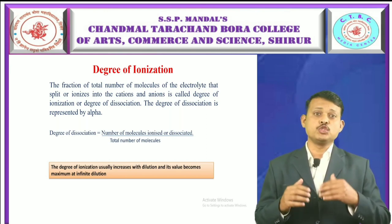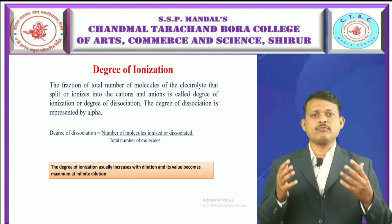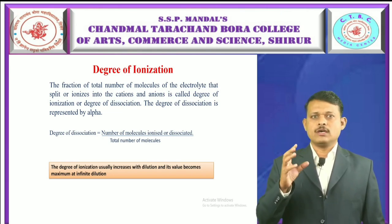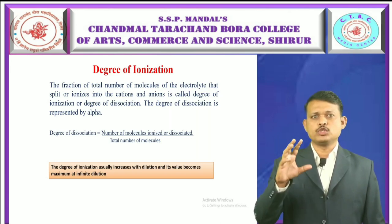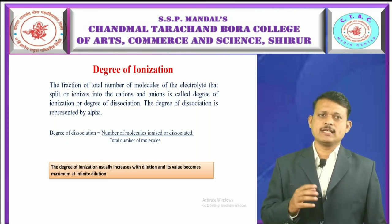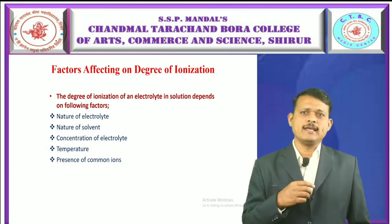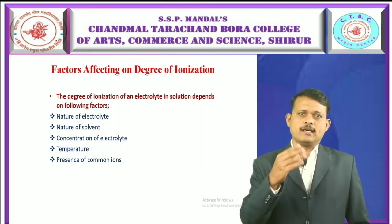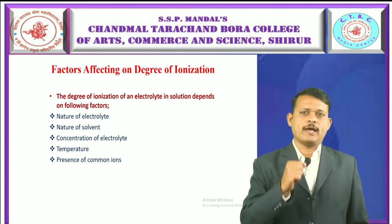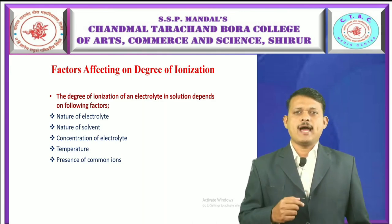The degree of ionization generally increases with increasing temperature and increasing dilution, and its value is maximum at infinite dilution. That is why the degree of ionization is very high at very low concentration — in dilute solution. The degree of dissociation depends on various parameters. These are: nature of electrolyte, nature of solvent, concentration of electrolyte, temperature, and the presence of ions.